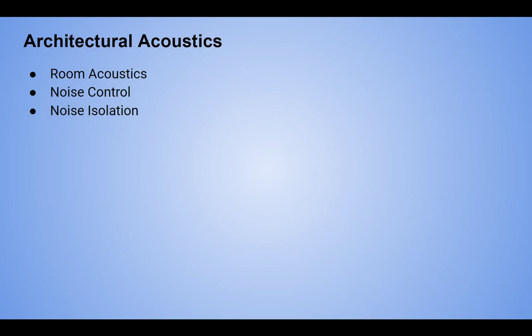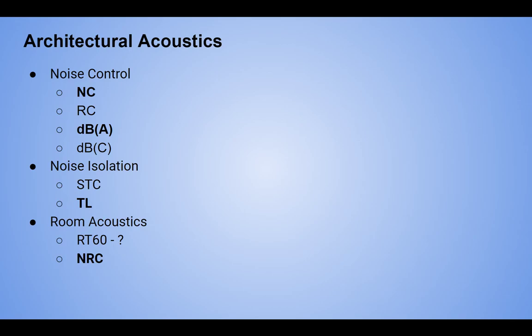If you see a breakdown of architectural acoustics, it's usually room acoustics, noise control, and isolation. I like to flip it — noise control first — because if you can't keep background noise in the space to an appropriate level, isolation and acoustics really don't matter. When we're getting into single number descriptors for noise control, we're looking at NC, which is Noise Criteria.